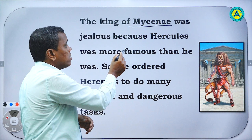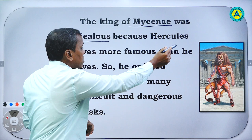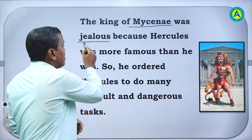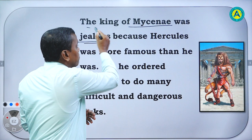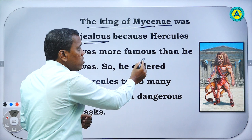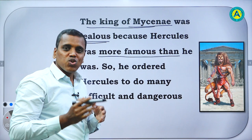He was jealous. Jealous of whom? Jealous because Hercules was more famous than he was. Jealous means envious — if you don't have something that others have. The popularity of Hercules made the king of Mycenae jealous, because Hercules was more famous than the king. That's why the king was jealous — envious.